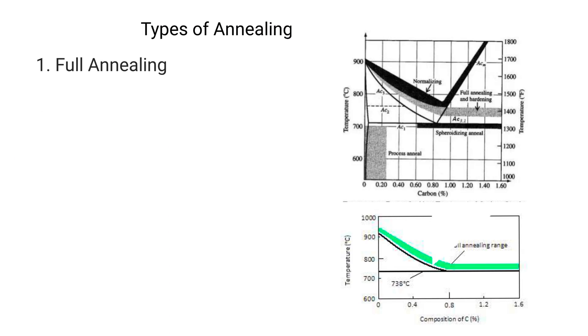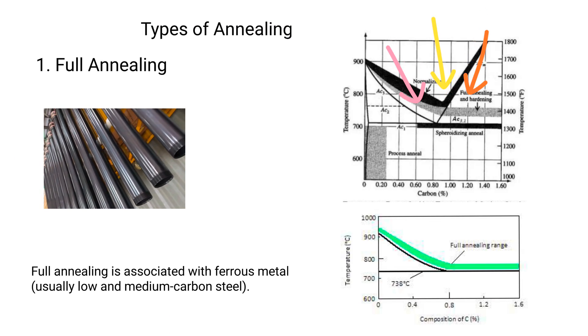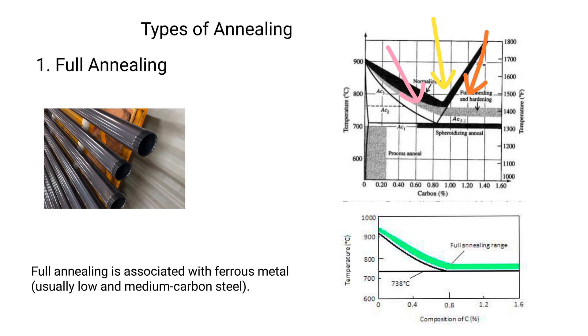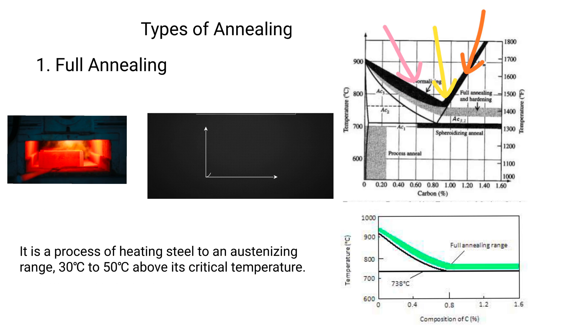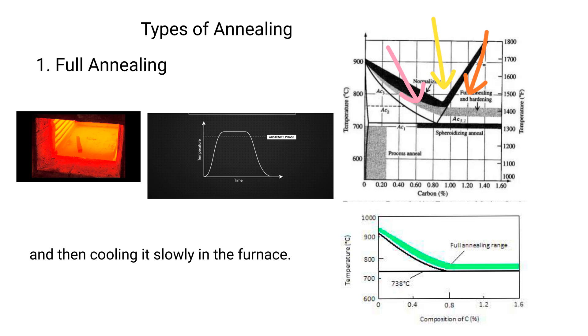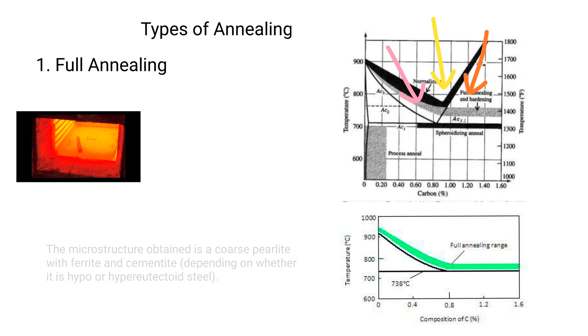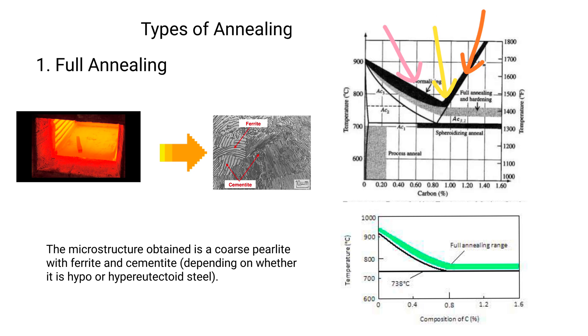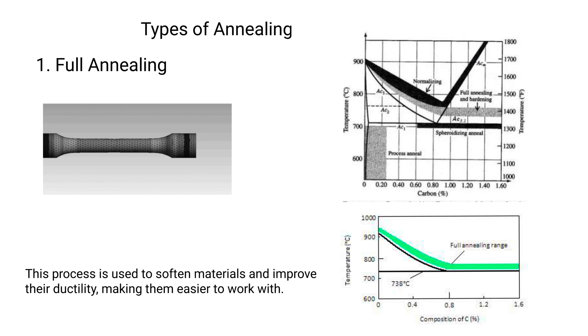1. Full annealing. Full annealing is associated with ferrous metals, usually low and medium carbon steels. It is a process of heating steel to an austenizing range, 30 to 50 degrees Celsius above its critical temperature. The temperature is maintained for a specific period, referred to as soaking, and then cooling it slowly in the furnace. The microstructure obtained is a coarse pearlite with ferrite and cementite, depending on whether it is hypo or hypereutectoid steel. This process is used to soften materials and improve the ductility, making them easier to work with.